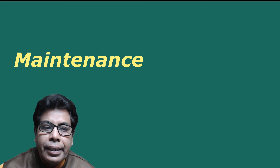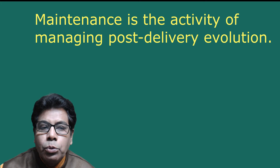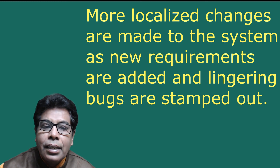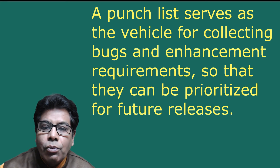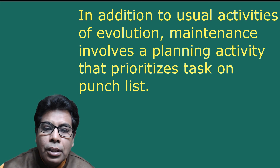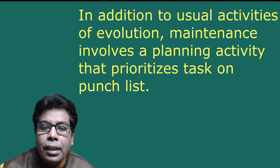Maintenance is the activity of managing post-delivery evolution. This phase is largely a continuation of the previous phase, except that architectural innovation is not an issue here. More localized changes are made to the system as new requirements are added and lingering bugs are removed. Since maintenance is in a sense the continued evolution of the system, its products are similar to the previous phase. In addition, maintenance involves managing a punch list of new tasks — a punch list serves as a vehicle for collecting bugs and enhancements so that they can be prioritized for future releases. Maintenance also involves a planning activity that prioritizes tasks on the punch list.